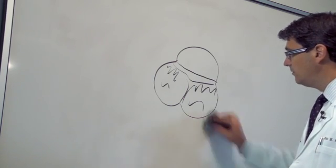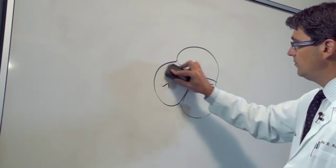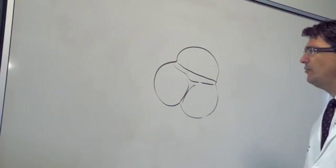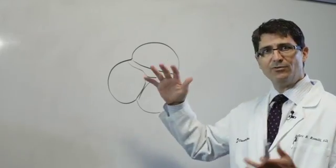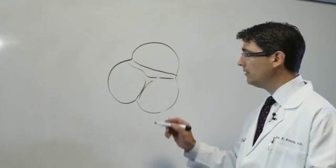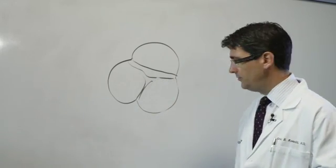If the valve has become regurgitant or leaky, it's often because one of the leaflets is floppy or loose and needs to be repaired, and we can fix that by suturing the valve directly.